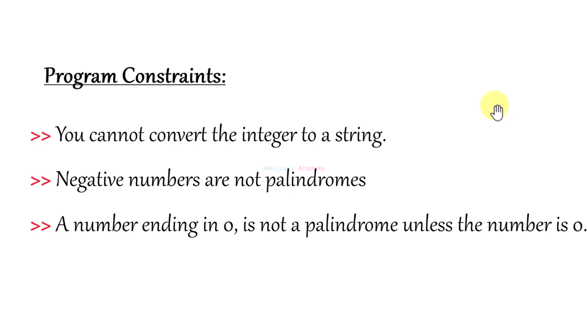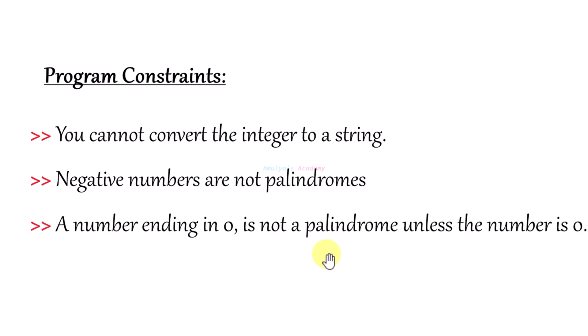Next, let's talk about program constraints. You can't convert the integer to a string. Negative numbers are not palindromes, and a number ending in 0 is not a palindrome unless the number itself is 0. We will take these conditions into account.